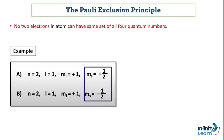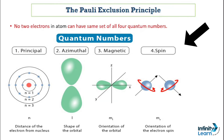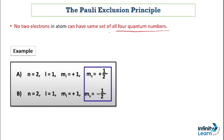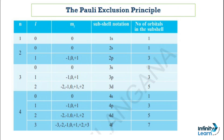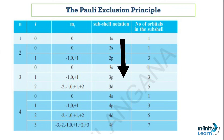Now let's understand Pauli's Exclusion Principle. Having covered all four quantum numbers, we can now see why we needed to know about them. Here is a table showing the effect of all four quantum numbers — it shows that as the number of shells increases, the number of sub-shells also increases, and we can find the number of orbitals in those sub-shells.